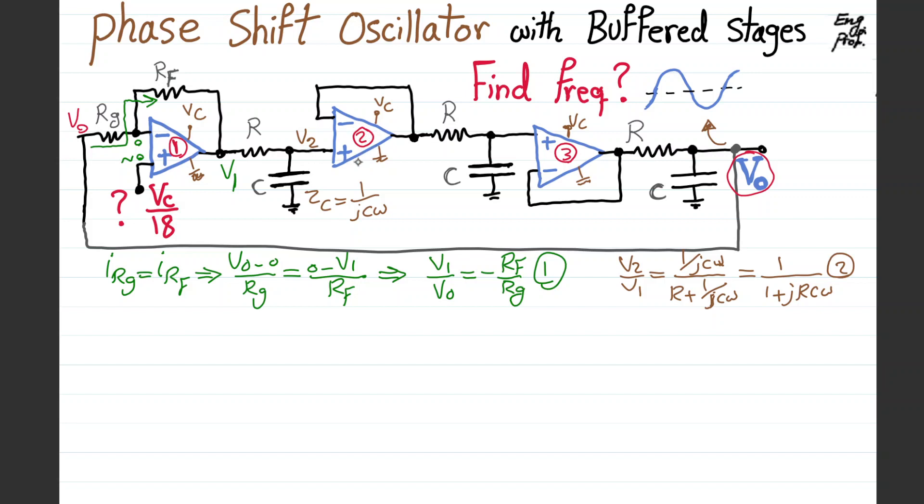Now V2 enters an ideal buffer. Because of virtual short, whatever appears at the positive input terminal should also be at the negative terminal, which goes to the output. This V2 is the input of another RC, buffered from the previous stage so it's not loading it, and V2 goes to V3. For the same reason, V3 over V2 equals one over one plus jRC omega. That's equation number three. V3 gets to the output because it's just a buffer, and we have final output Vout with another RC voltage division.